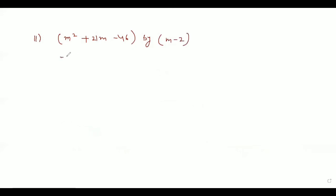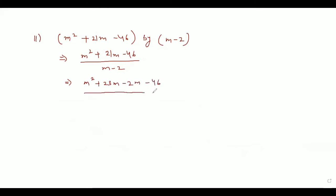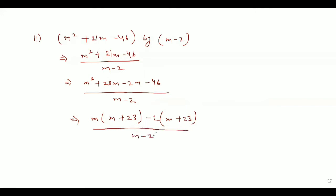So in the next step, we write m squared plus 21m minus 46 divided by m minus 2. We split the middle term as m squared plus 23m minus 2m minus 46, divided by m minus 2. Taking m as common gives m plus 23, and taking minus 2 as common also gives m plus 23. So we are left with m minus 2 times m plus 23, divided by m minus 2.